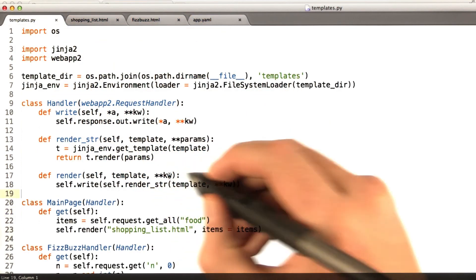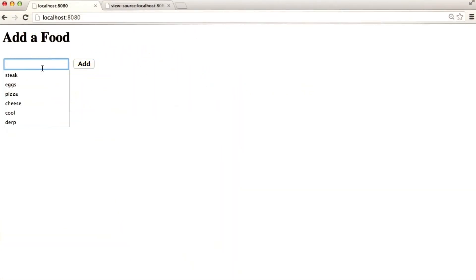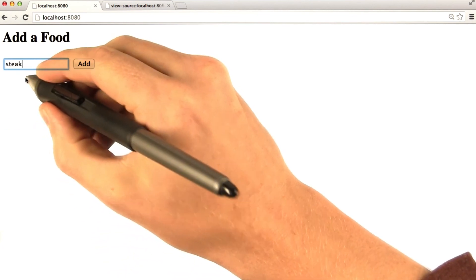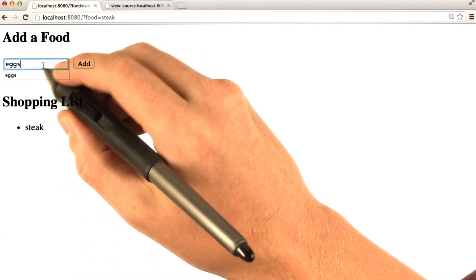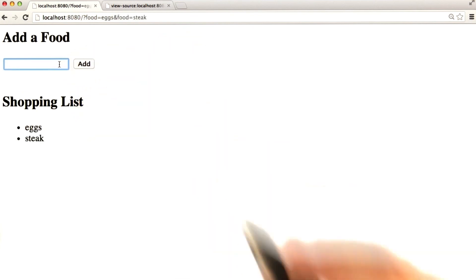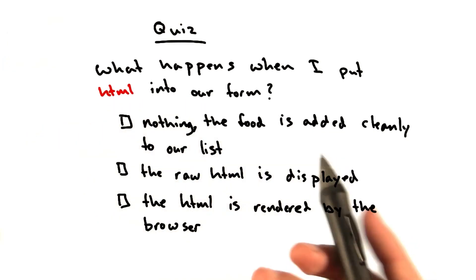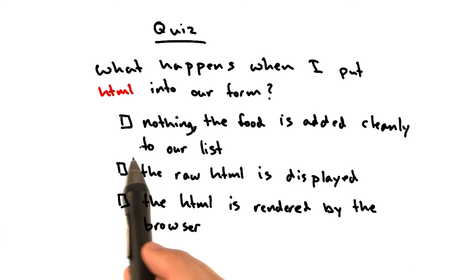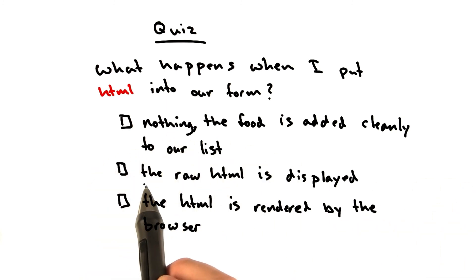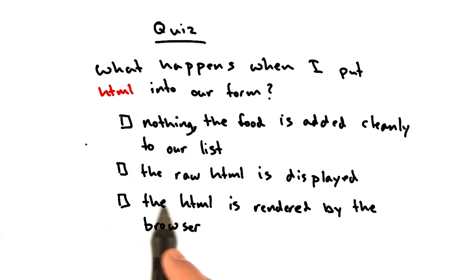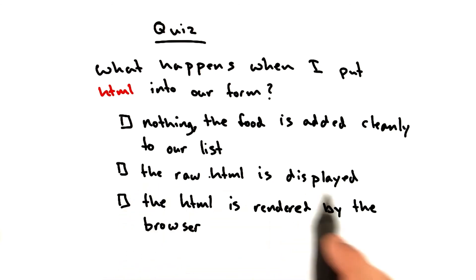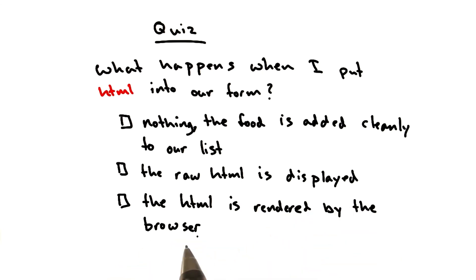Now there is one little problem I'd like to show you. Let's add some food — now we can just autocomplete our food because our shopping list is learning our tastes. What happens if I really want some pizza and I put our pizza in an h1? Nothing — the HTML is not interpreted and the food is just added directly to our list. Or the raw HTML — in this case the h1 — is displayed, and we have the HTML actually rendered, in which case our food appears very big in our list. Why don't you go ahead and try yourself and see what happens.